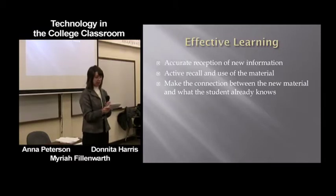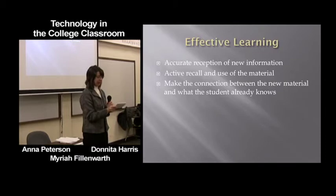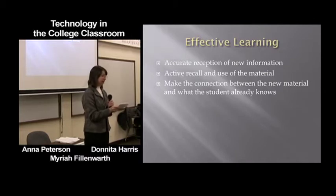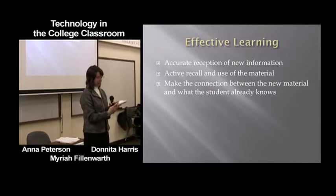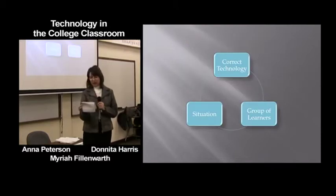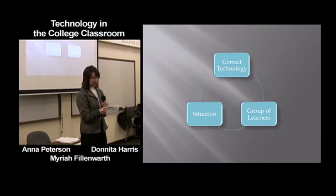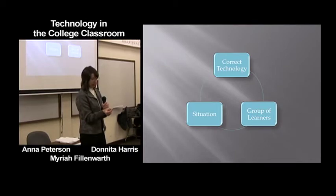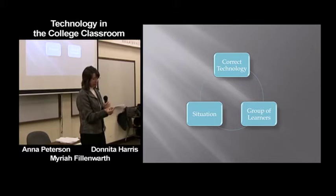According to Level, for adult students, effective learning results from the accurate initial reception of new information, followed by active recall and use of materials, and then making connections between the new material and what they already know. There are a multitude of technologies available for instructors to use to create effective adult learning. The key is to pair the correct technology with a given group of students in a given situation. According to Merriam and Cunningham, the use of technology in the classroom can be likened to the array of concentric circles that radiate from the center of a pool of water when a pebble breaks the surface.